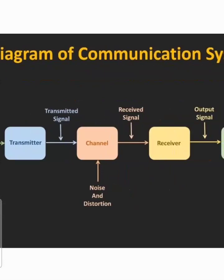The channel is basically divided into two parts: first is wired channel and second is wireless channel. In the wired channel, it is further divided into two parts: coaxial cables and optical fibers. Coaxial cables are used when electrical signals are present, while optical fibers are used to transmit information signals in the form of optical or light waves.